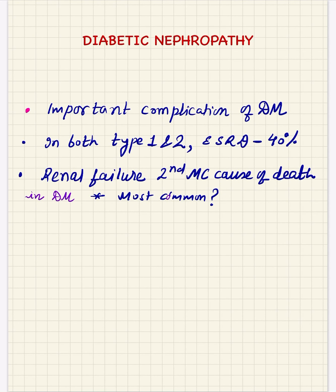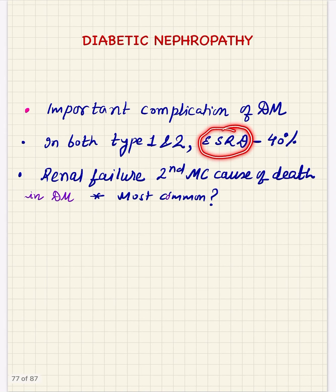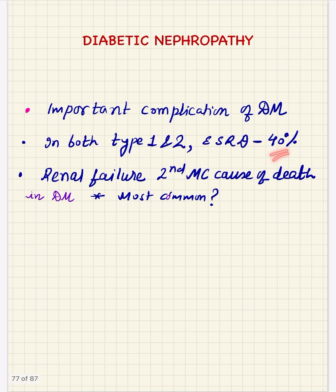Diabetes is an endocrine metabolic disorder with many important chronic complications resulting from persistent hyperglycemia. Diabetic nephropathy is one of them. It is seen in both type 1 and type 2 diabetes and can lead to end-stage renal disease in about 40% of both type 1 and type 2 diabetics. It can very often lead to renal failure and is the second most common cause of death in diabetics.